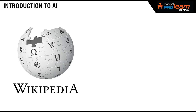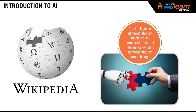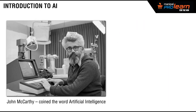Artificial Intelligence, by definition as per Wikipedia, is the intelligence demonstrated by machines, as compared to natural intelligence, which is demonstrated by human beings. That is the Wikipedia definition.